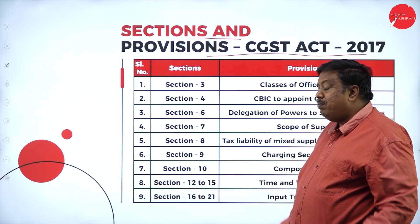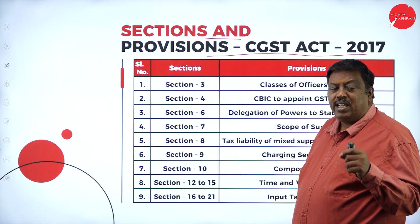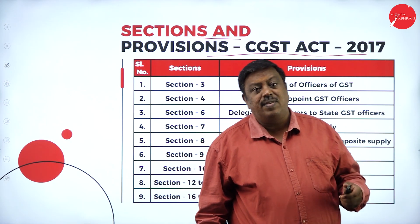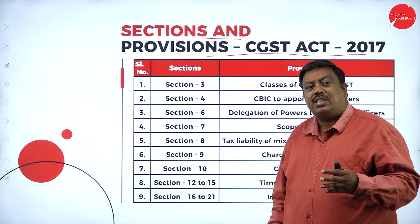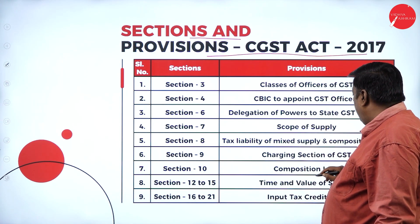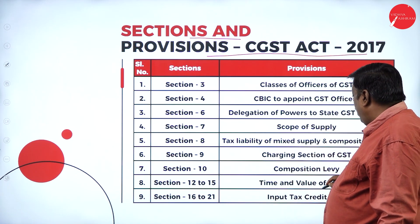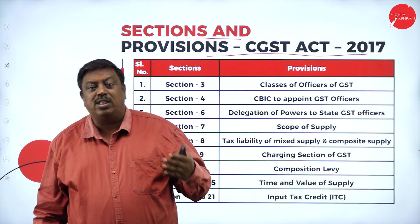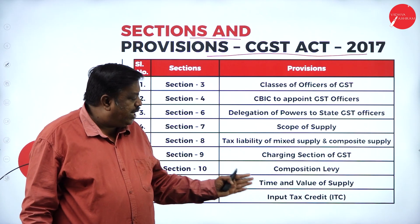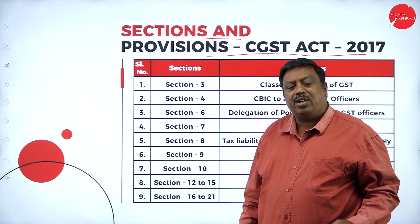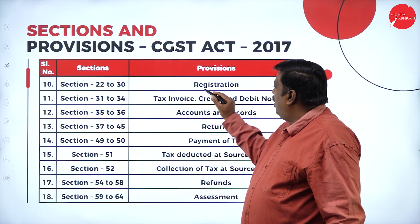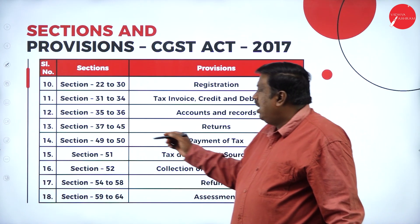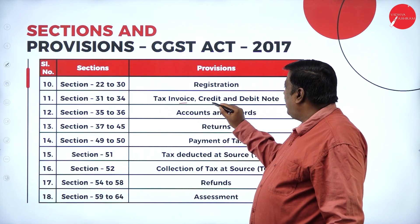Section 9 is the charging section of GST — it covers what tax rates are to be charged. In GST there are five rates: 0%, 5%, 12%, 18%, and 28%, and this section determines which goods and services fall under which rate. Section 10 covers composition levy at 1% on turnover. Sections 16 to 21 cover input tax credit — for whom it is given, for what purpose, and what the benefit is. Sections 22 to 30 cover the registration process, terms, conditions, and required documents.